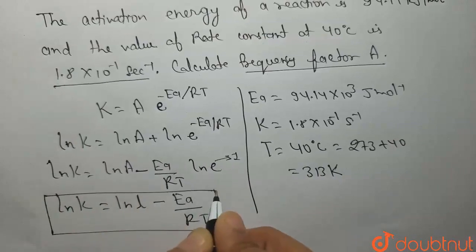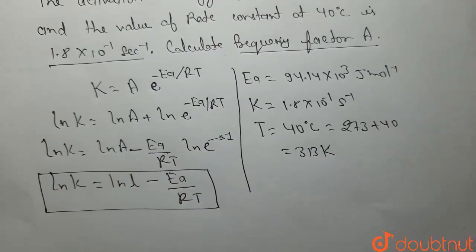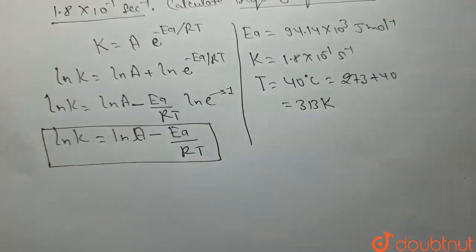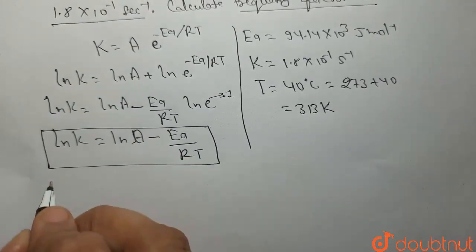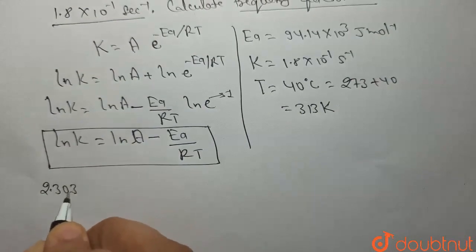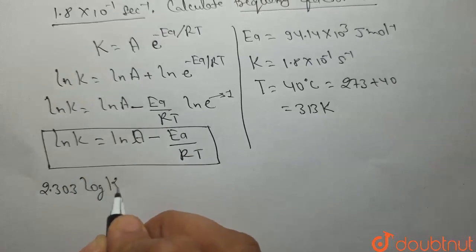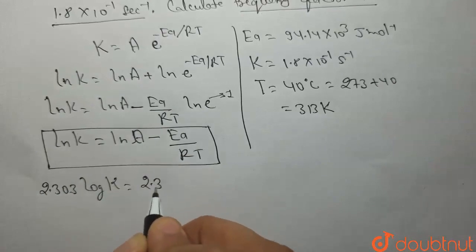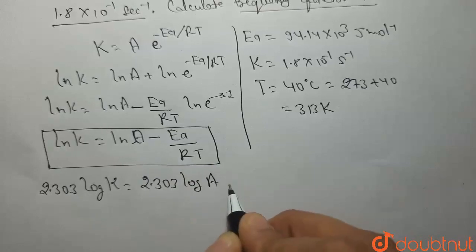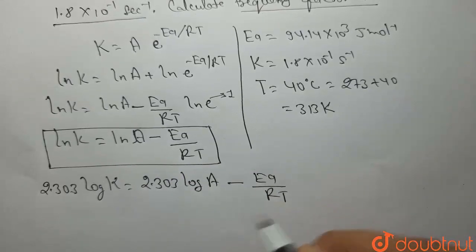इस equation को हमें log में convert करना होगा, तब ही हमारी value of A निकल के आएगी। Log में convert करने के लिए 2.303 से multiply करना होगा: log k = log A − Ea/(2.303·RT).